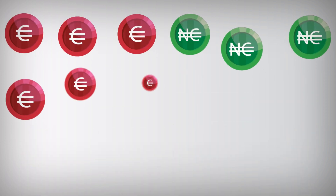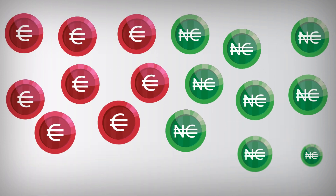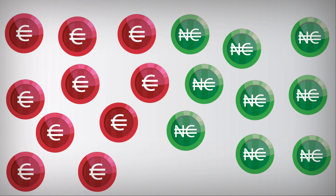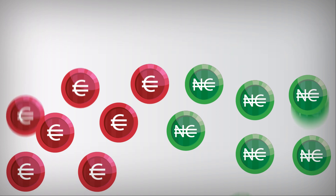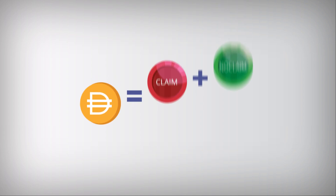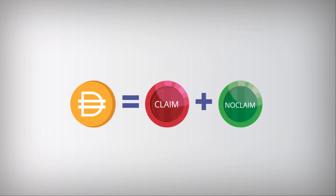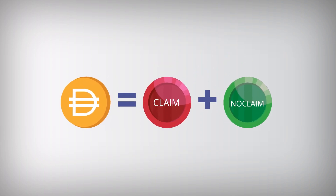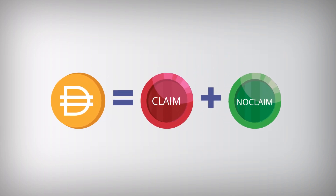The backbone of the protocol are its fungible coverage tokens: claim and no-claim tokens. They are automatically minted when collateral such as DAI is deposited by the user.